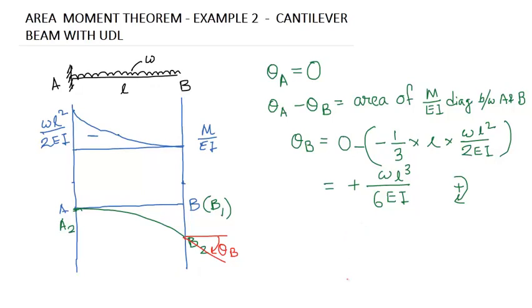Now we have to calculate the deflection, especially the distance B2. The deflection equals the moment of M by EI diagram between A and B about B.